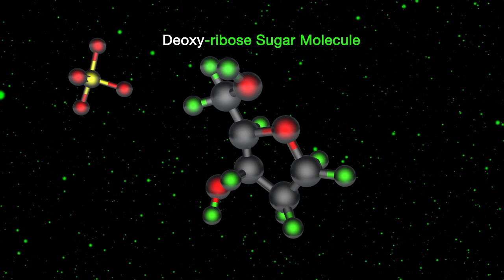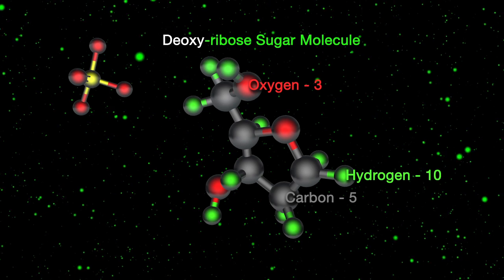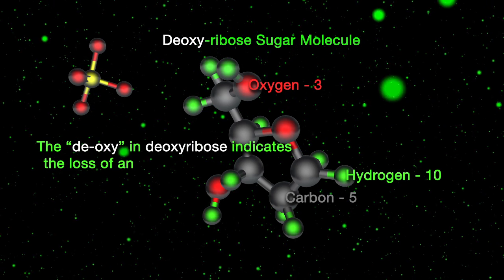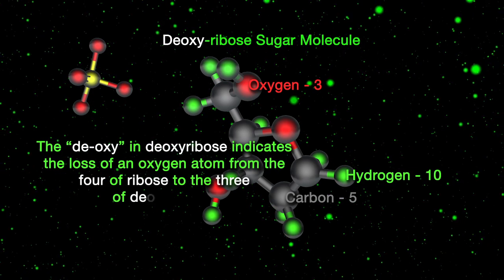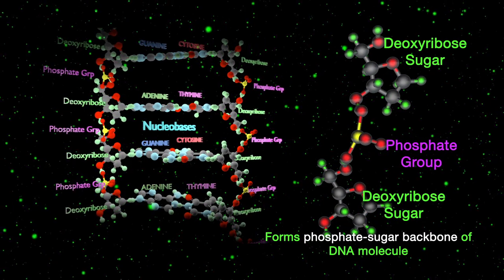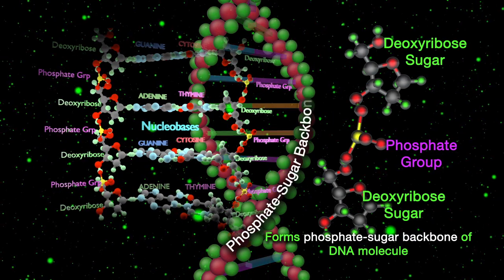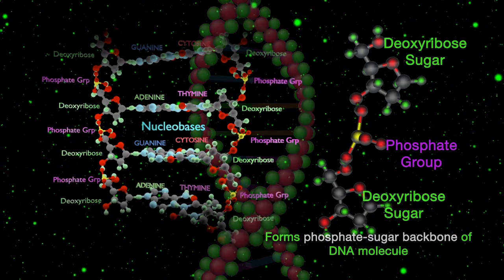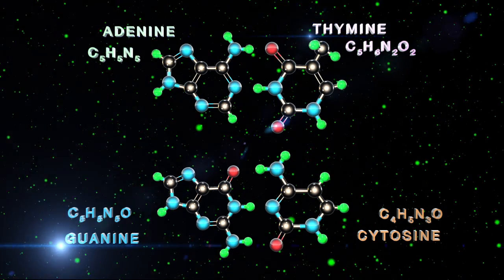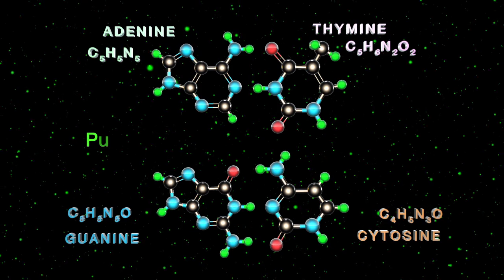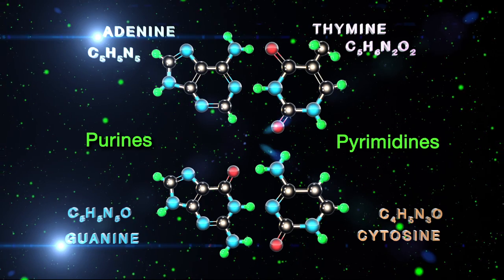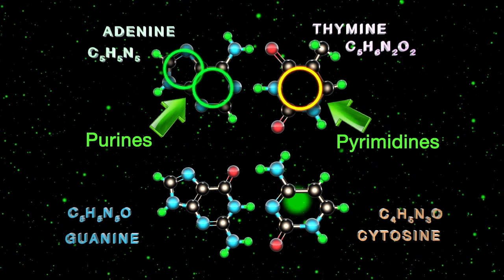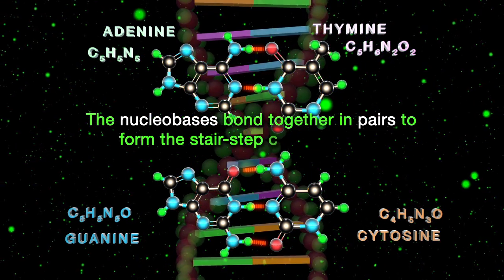The deoxyribose sugar molecule is composed of five carbon atoms, three oxygen atoms, and ten hydrogen atoms. The normal ribose sugar molecule has four oxygen atoms. The deoxy in deoxyribose indicates the loss of an oxygen atom from the four of ribose to the three of deoxyribose. The phosphate group and the deoxyribose molecule bind together in an alternating scheme to form the phosphate sugar backbone of the DNA molecule, usually represented as the two spirals that support the stair-step nucleobase pairs. The four nucleobases are adenine, thymine, guanine, and cytosine.